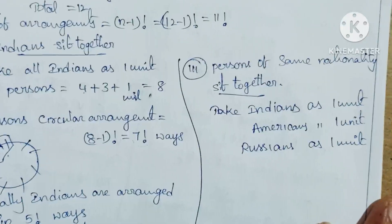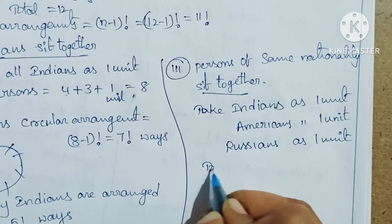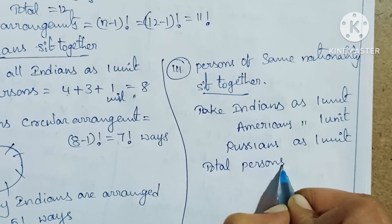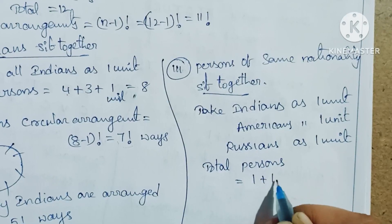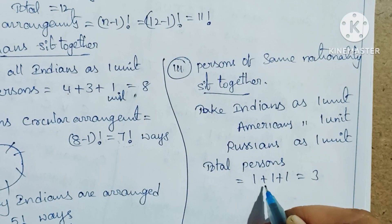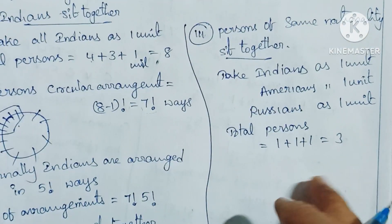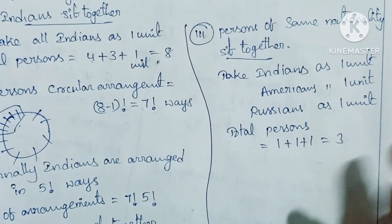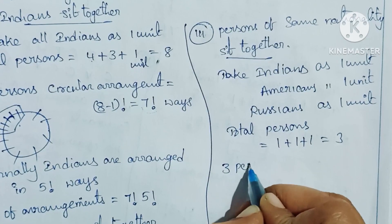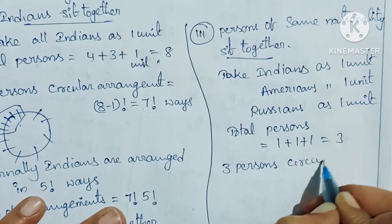Total persons = 1 unit of Indians + 1 unit of Americans + 1 unit of Russians = 3 units. So we arrange 3 persons/units in a circular arrangement.